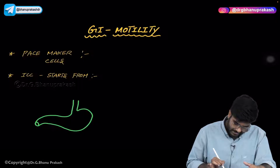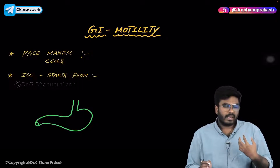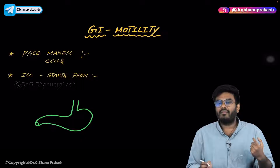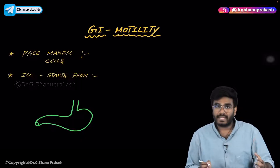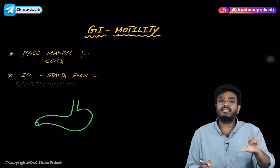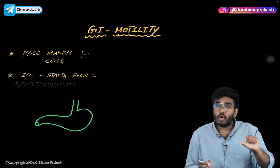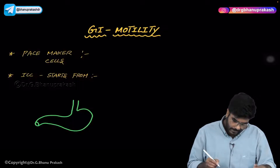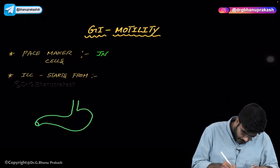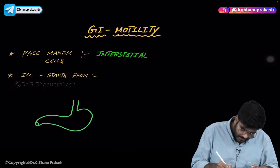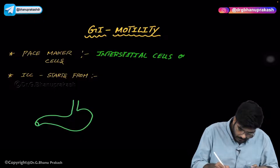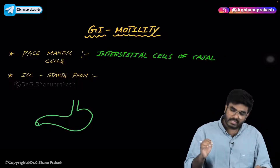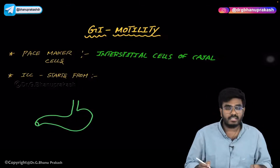What is the pacemaker cell in the GI tract? Just as we have the SA node as a pacemaker in our heart, we have pacemaker cells in the GI tract which generate action potentials, depolarize smooth muscle cells, and cause contraction of GI smooth muscles. These pacemaker cells are called the Interstitial Cells of Cajal.